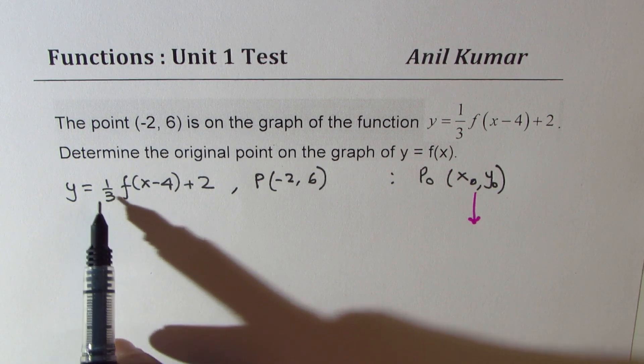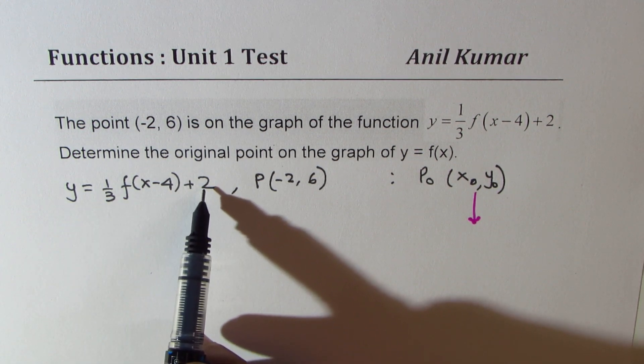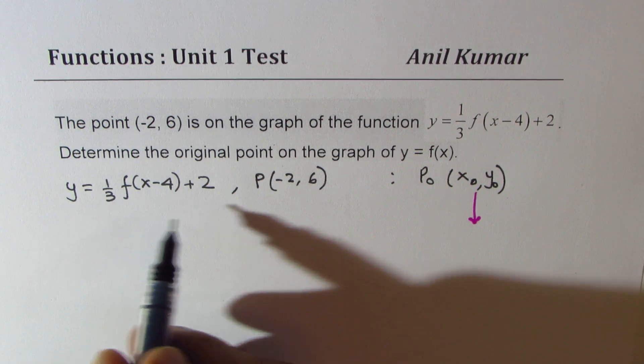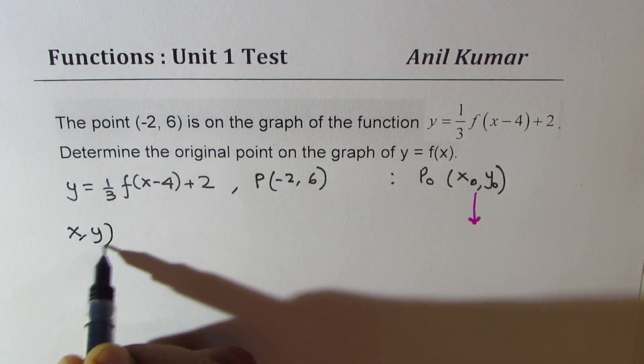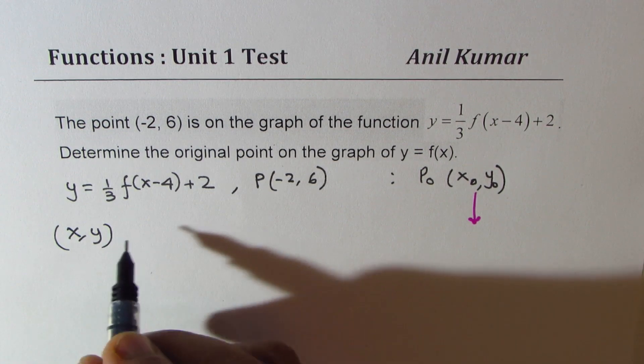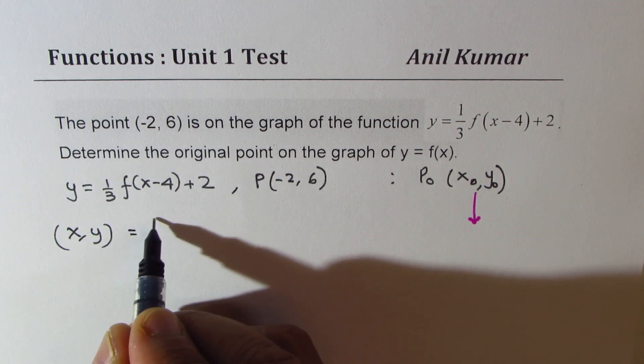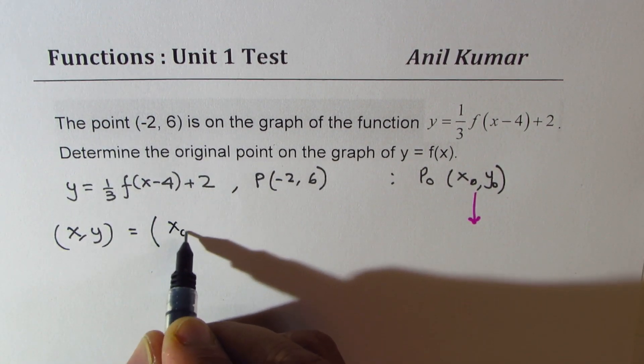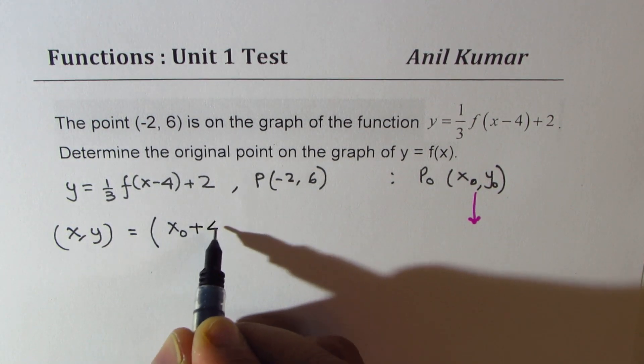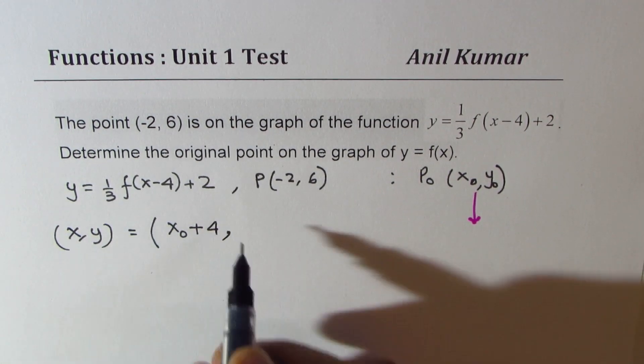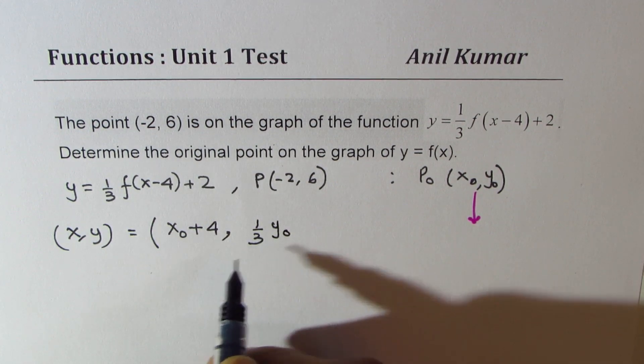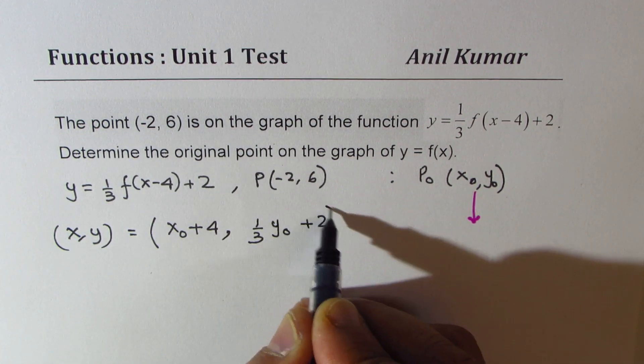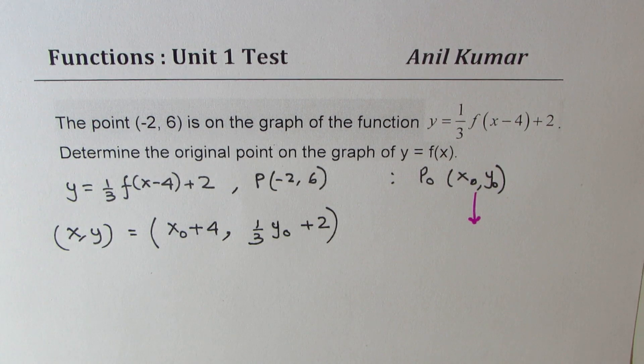And the y value should be divided by 3 and then added 2. So what you really find here is that any point (x, y) on the given transformed function is basically equal to the original point plus 4 for the x value, and for the y value, one third of the original y coordinate plus 2. So that is the transformation.